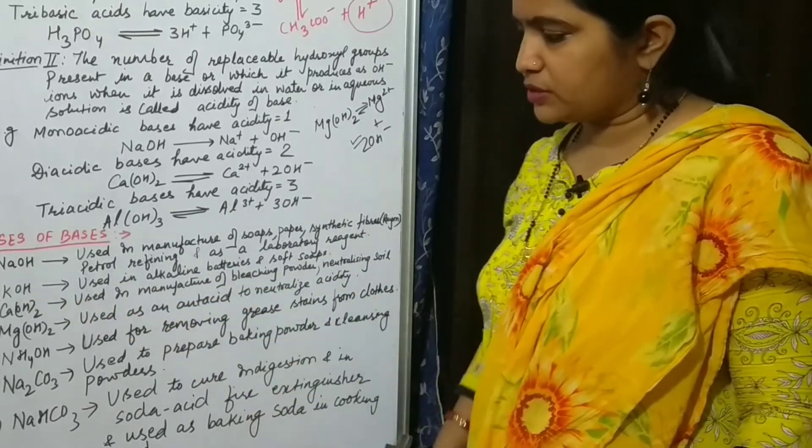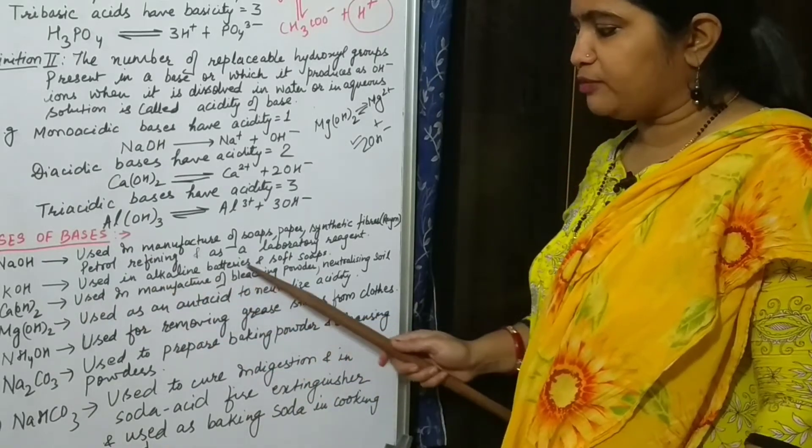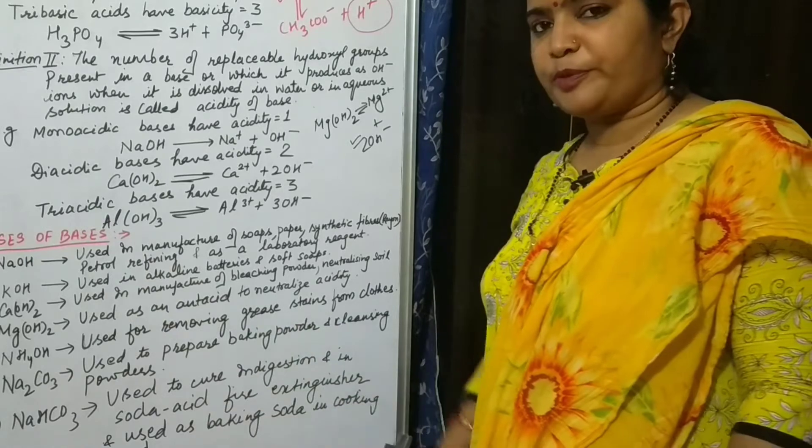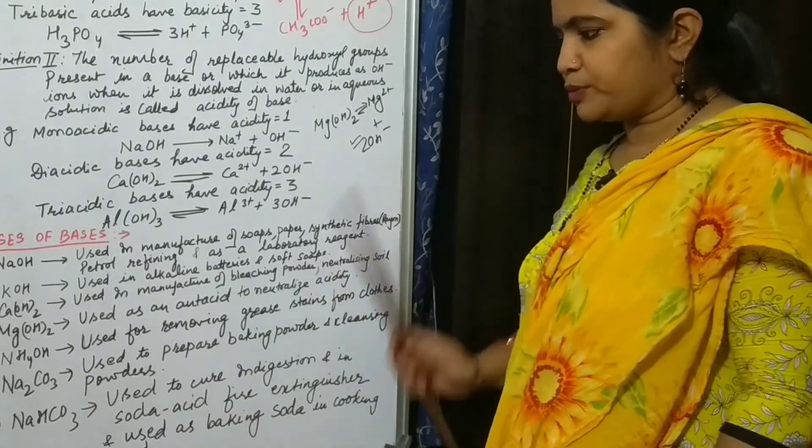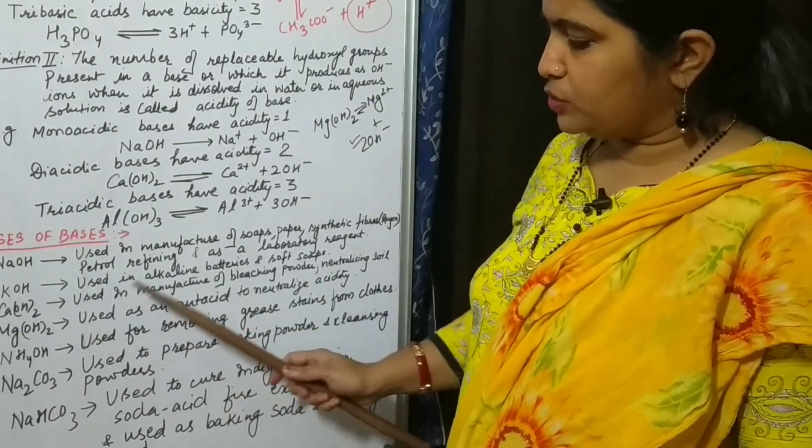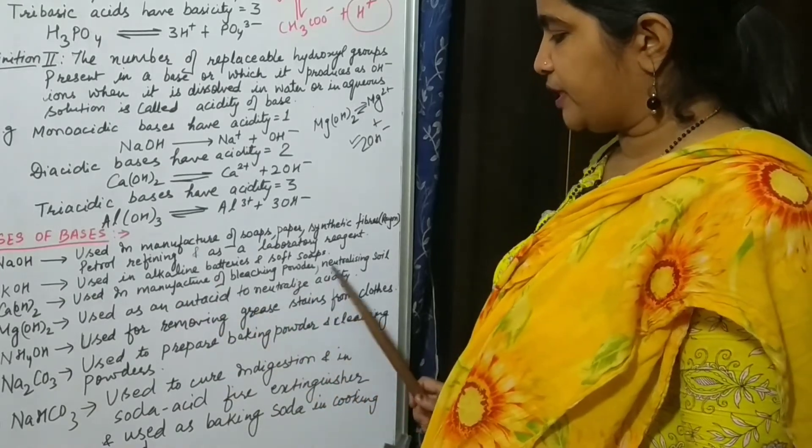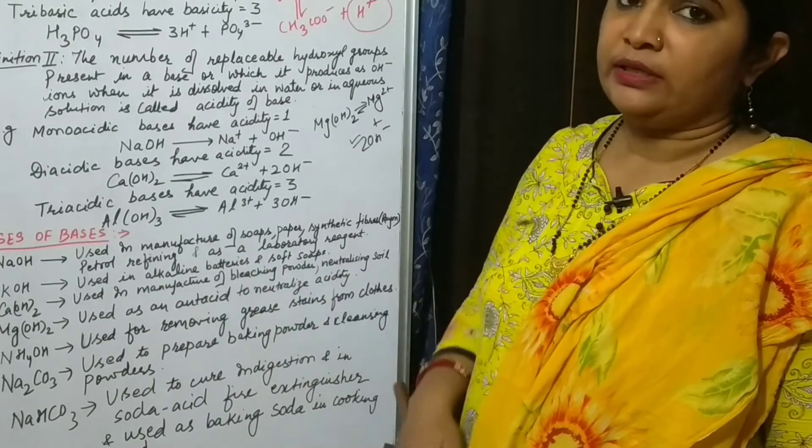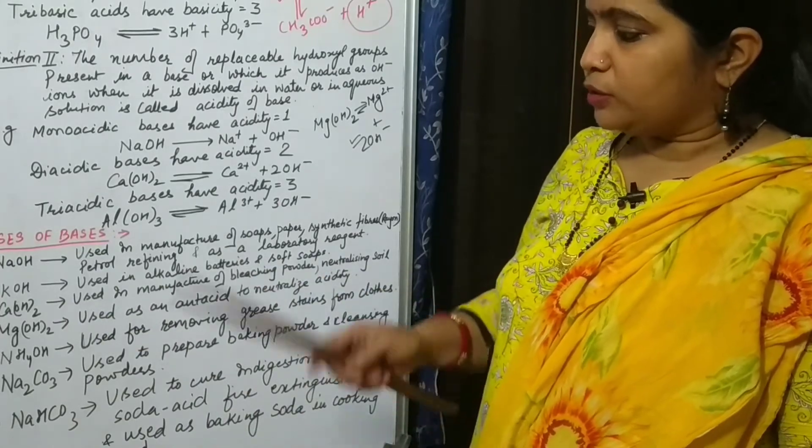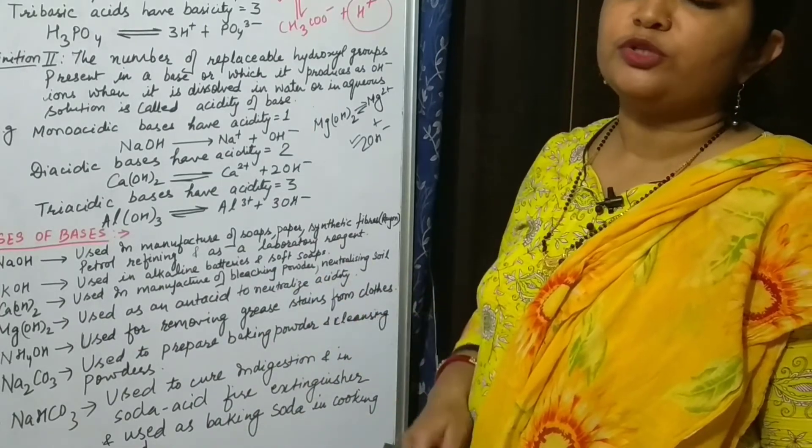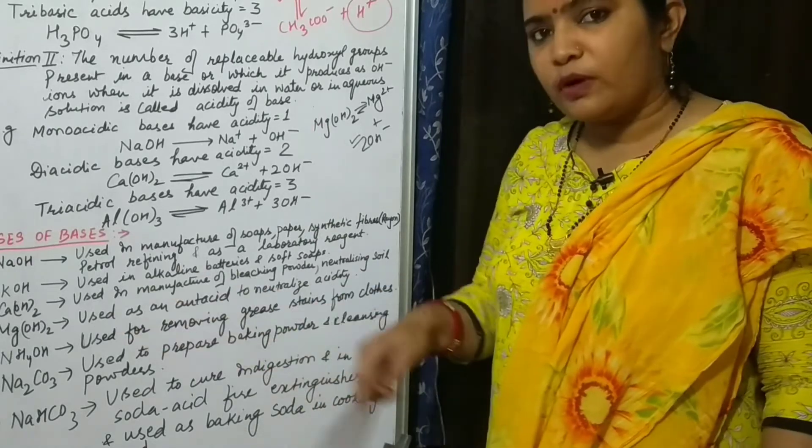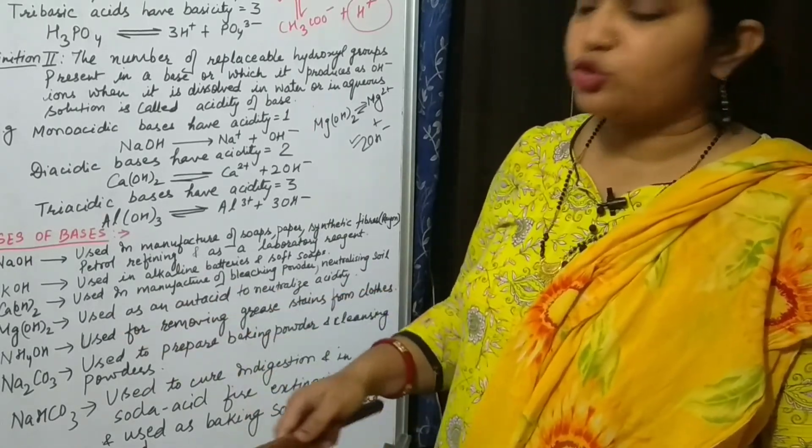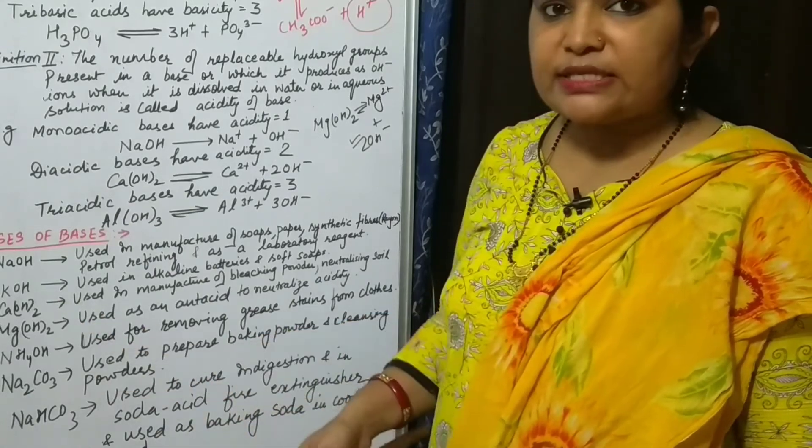Second is potassium hydroxide. It is used in alkaline batteries and soft soaps. Next, calcium hydroxide. It is used in manufacture of bleaching powder and it is also used for neutralizing the soil. Sometimes those areas which are prone to acid rains, their soil becomes acidic, means acidity increases in the soil. So to neutralize the effect, calcium hydroxide is used.